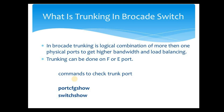For example, if you have a 4 Gbps FC port and you trunk another 4 Gbps port, then the total bandwidth will become 8 Gbps and it will also provide load balancing. Trunking can be done on F port and E port in Brocade SAN switch.